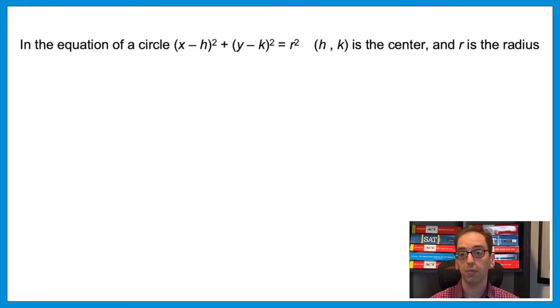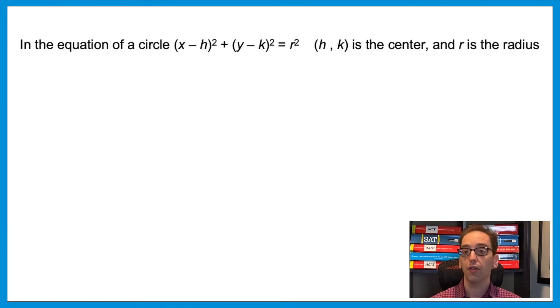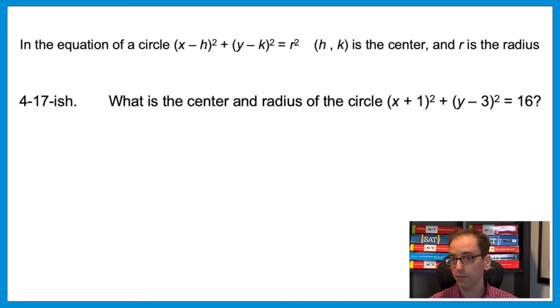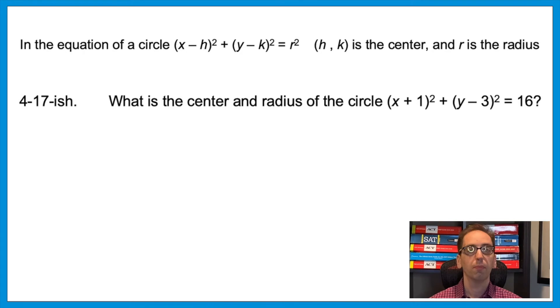That quadratic formula question also appeared on the March exam — it's being worked into the rotation. You could also use completing the square. Before we cover that, let's refresh the equation of a circle: (x − h)² + (y − k)² = r², where h and k are the coordinates of the center and r is the radius. Note that h and k are negated — you have to change the signs to find the actual center. For example, center (1, −3) with r² = 16 means radius = 4.